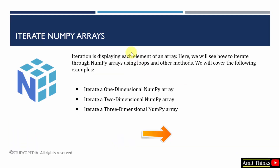Iteration means displaying each element of an array. For that, we will be using the for-in loop. We will work through examples to iterate a 1D array, a 2D array, as well as a 3D array. Let's see the examples.